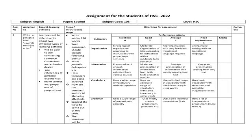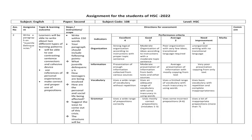Here is the assignment. Please look at the screen and you will find the assignment, and I will discuss the points given in this particular assignment. This is an assignment of English Second Paper, Assignment Number Two: write a paragraph on juvenile delinquency. What does juvenile delinquency mean? Do you have any idea about juvenile delinquency?